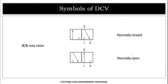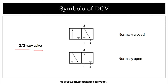Our next symbol is the three by two direction control valve. Here there are two positions and three ports: pressure port, exhaust port, and work port. In the normally closed position, the work port is connected to the exhaust port, but the pressure port is not connected to the work port, so oil is not passing through the cylinder.